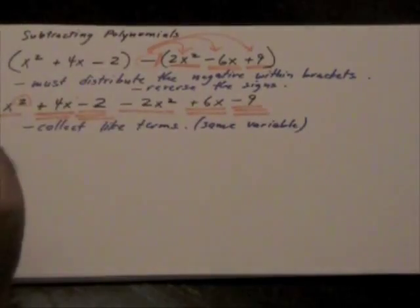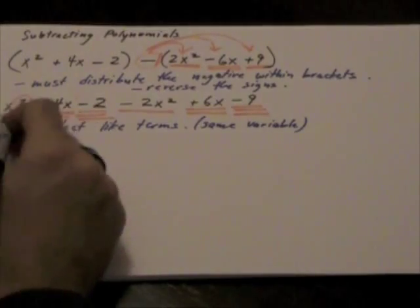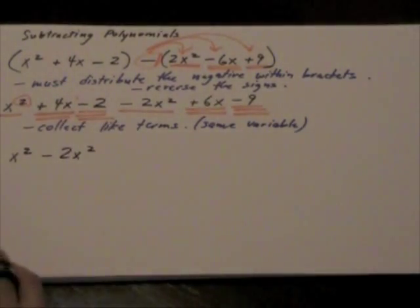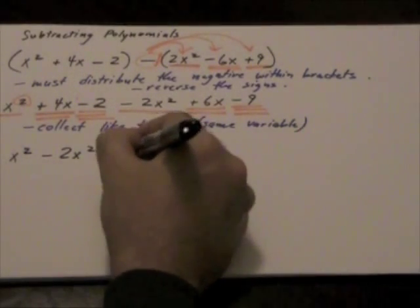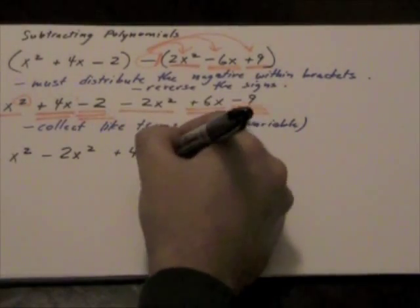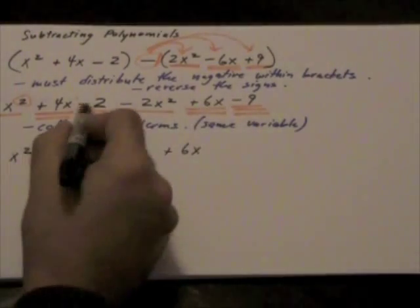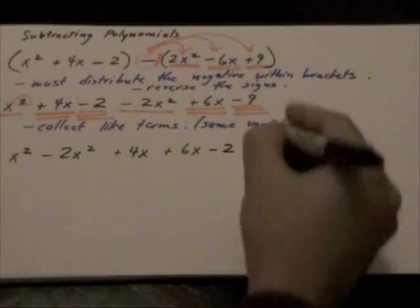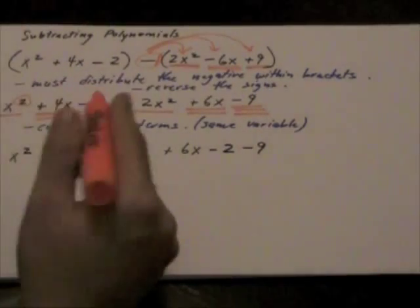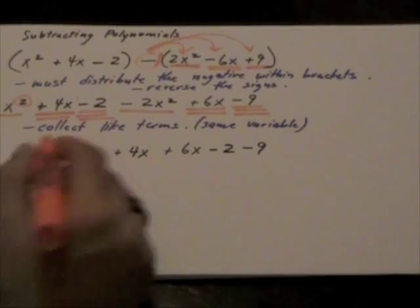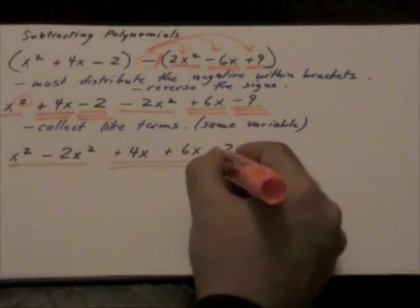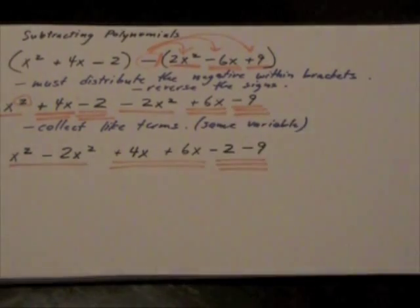So what we are going to do is we are going to collect the like terms and rewrite them. x squared minus 2x squared. Positive 4x. Positive 6x. Negative 2 and negative 9. And now notice here, my first two terms, one underlined, double underlined, triple underlined. Meaning those are my like terms.